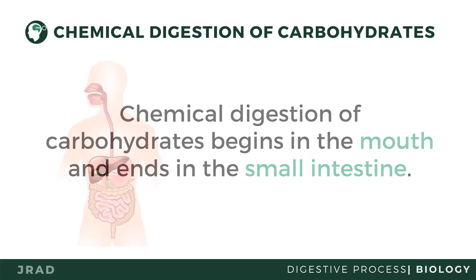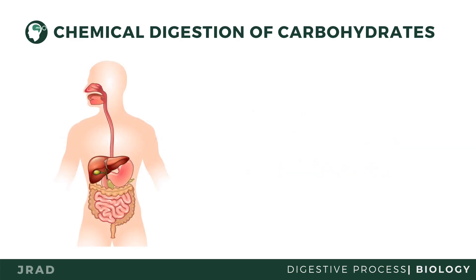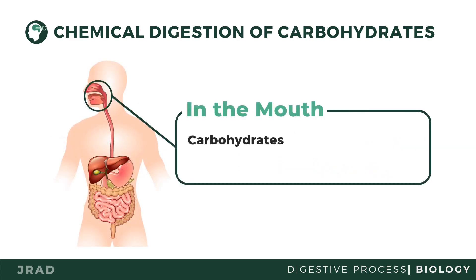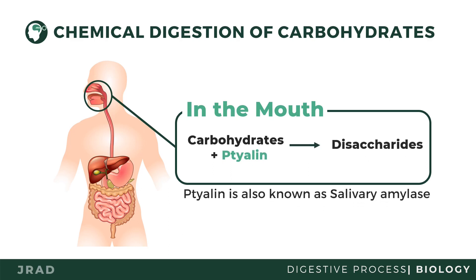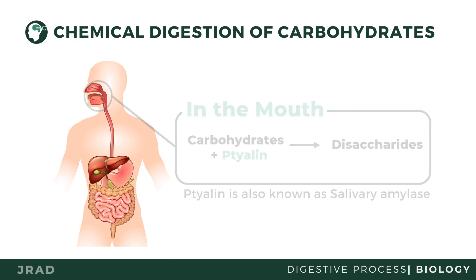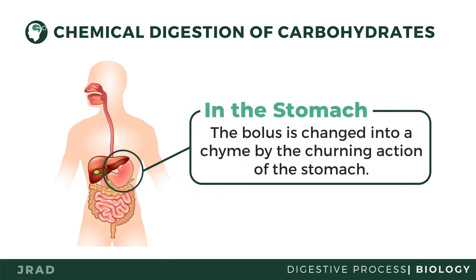In the mouth, carbohydrate-rich food like rice is changed by the salivary amylase ptyalin into disaccharides, or double sugars. The bolus that contains disaccharide will be changed into chyme by the churning action of the stomach. This means that the digestion of carbohydrates in the stomach is purely mechanical.